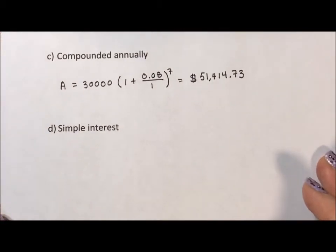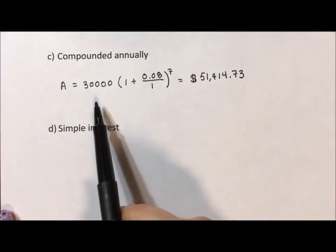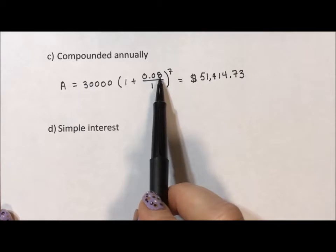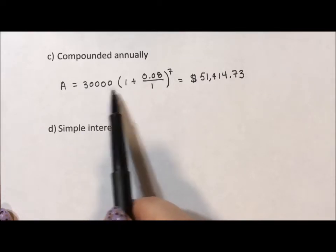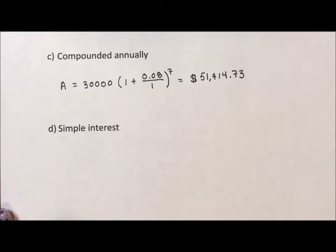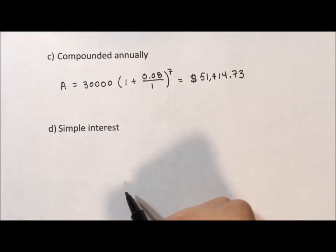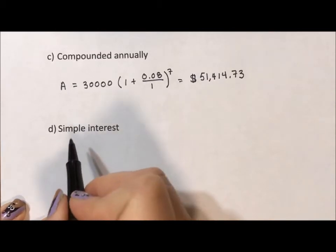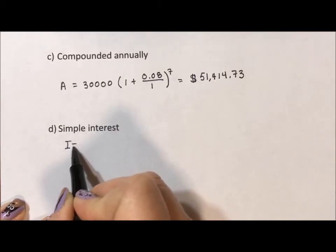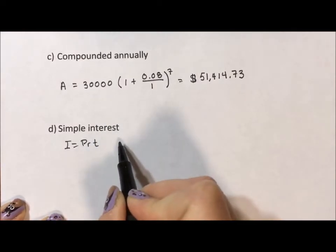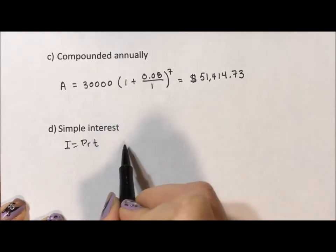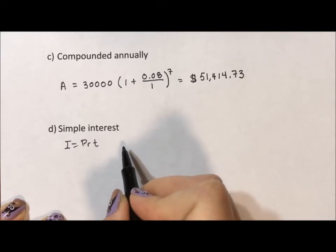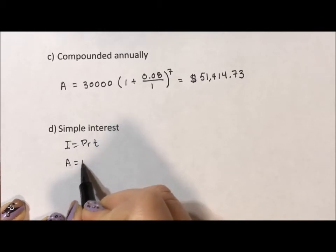The big question becomes: what's the difference between compounding annually and simple interest? Compounding annually means that at the end of the year you've earned 8%, that 8% gets added into your principal, and the next year instead of $30,000 you're earning on 8% more than $30,000. So each year you earn a little bit more interest than the year before. Simple interest is when you calculate it once and multiply it out. We could say interest equals principal times rate times time, get a value, and then just multiply it by 7 and add it back in.